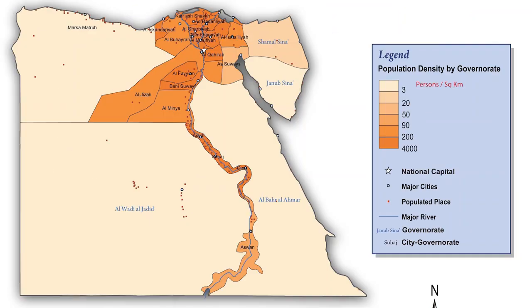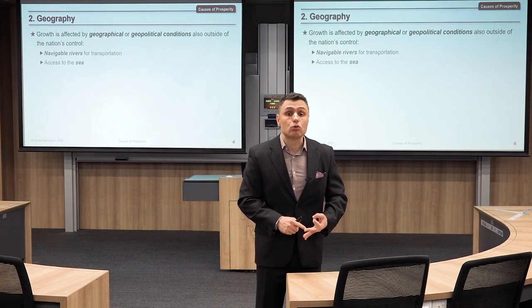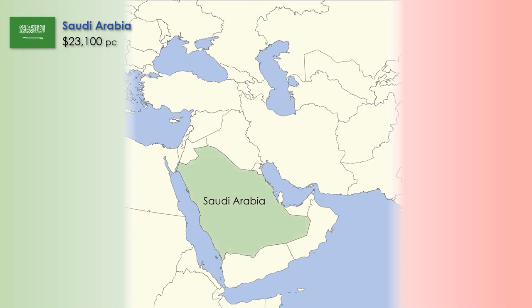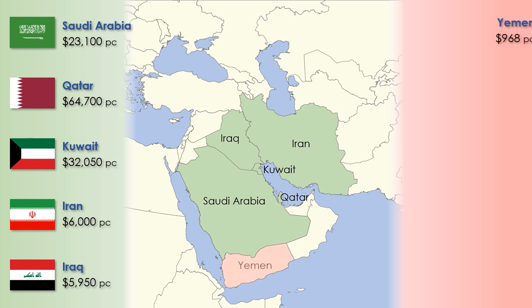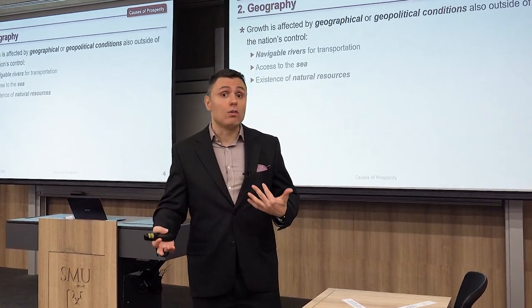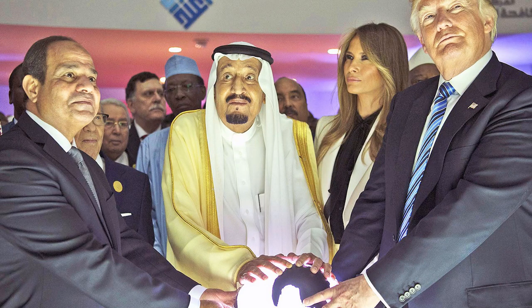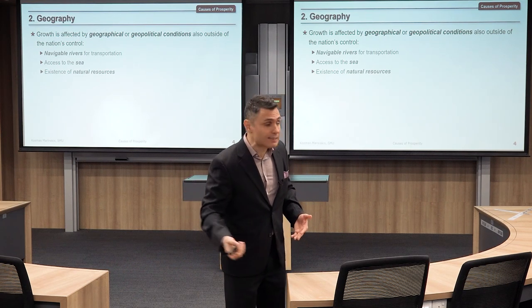If you look at the geography of Egypt, the entire country is almost deserted except around the Nile River, because the river was an opportunity for agriculture, communication, and transportation. The existence of natural resources is also extremely important. The fate of Saudi Arabia, Qatar, Kuwait, Iran, and Iraq is vastly different from Yemen or Afghanistan solely because of natural resources. Having oil doesn't solve all problems, but it provides capital that countries without natural resources cannot acquire.